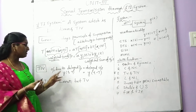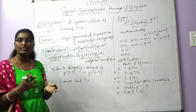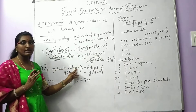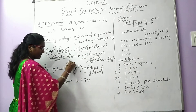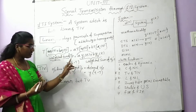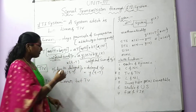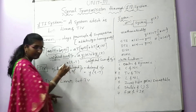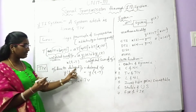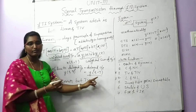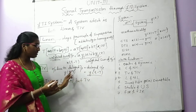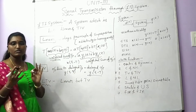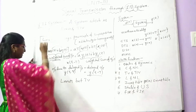Time invariant means if there is any delay in the input signal, the same delay must be reflected in the output. If the input is delayed by T₀ — that is, X(t − T₀) — the same delay must appear in the output as Y(t − T₀). If the output due to a delayed input equals the delayed output, the system is time invariant; otherwise it is time variant.